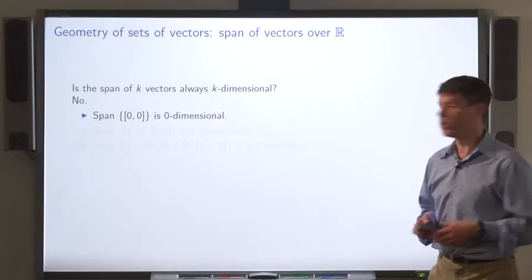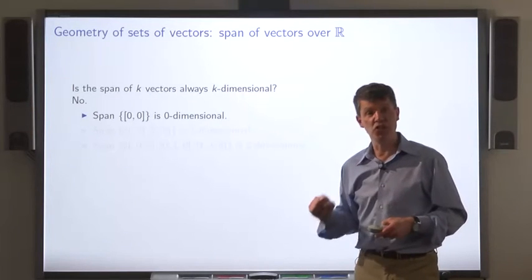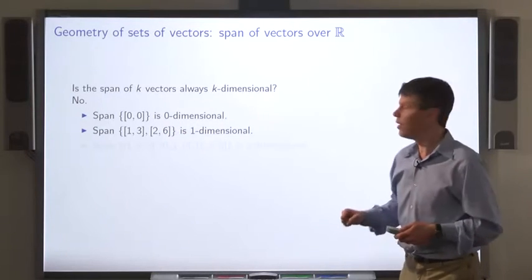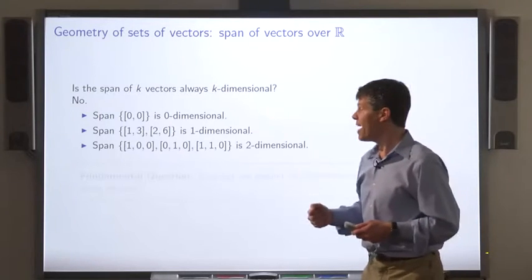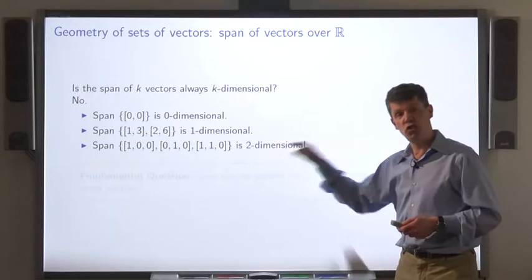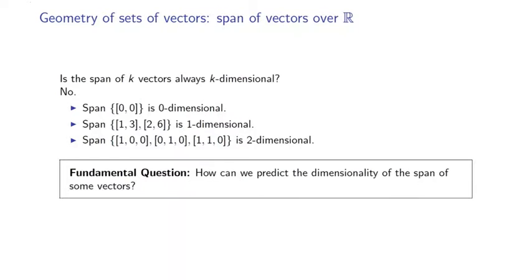For example, the span of the zero vector consists just of the zero vector — a zero-dimensional geometric object. The span of these two vectors is a line, a one-dimensional geometric object. The span of these three vectors is a two-dimensional object, a plane, which raises a fundamental question: given k vectors, how can we predict the dimensionality of the geometric object formed by their span?